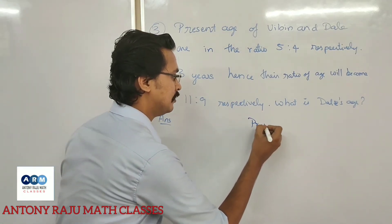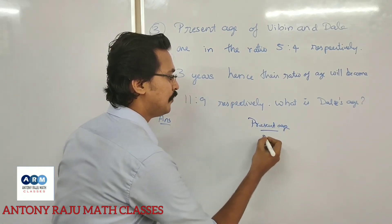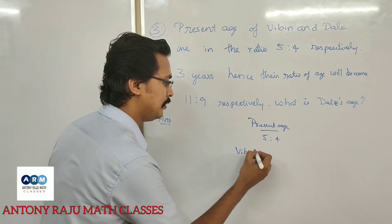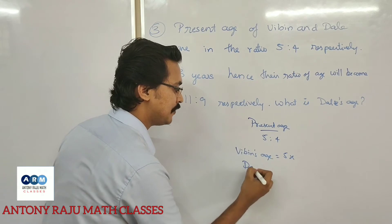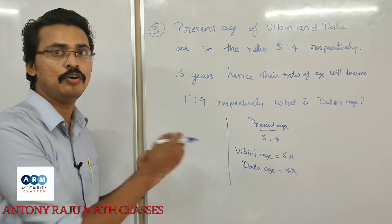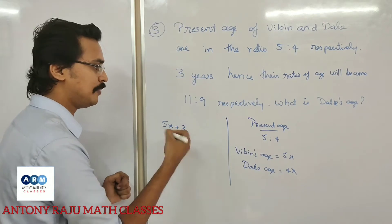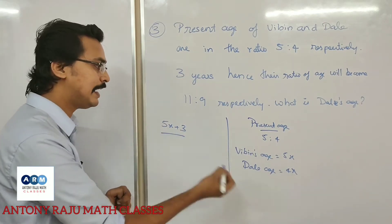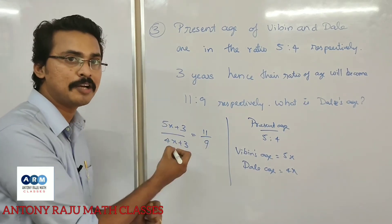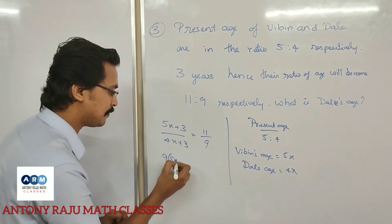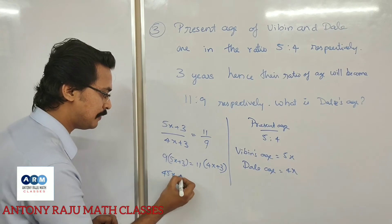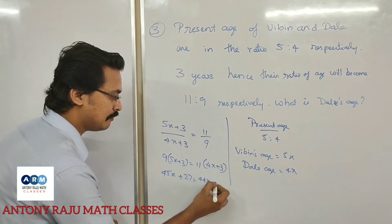Let Vipin's present age be 5x and Dale's age be 4x. Three years hence, the equation becomes: 5x plus 3 over 4x plus 3 equals 11 over 9. Cross multiplying, we get 9 into 5x plus 3 is equal to 11 into 4x plus 3. That gives 45x plus 27 equals 44x plus 33.